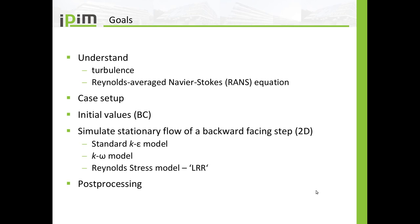The goals are the following: I want you to understand turbulence in general and the Reynolds average Navier-Stokes equations. I want to show you what the case setup looks like and how to set the initial values and the boundary conditions, especially for the turbulent quantities. I am going to run three simulations of a backward facing step, which is a two-dimensional simulation, using three different turbulence models: the standard K-Epsilon model, the K-Omega model, and a Reynolds stress model called LRR.